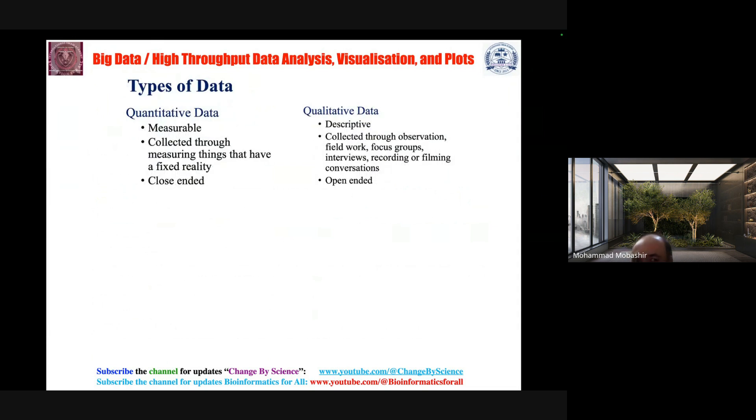There are two different types of data: quantitative and qualitative. Quantitative data is measurable, collected through measuring things that have a fixed reality and is close-ended. Qualitative data is descriptive, collected through observation, field work, focus groups, interviews, recording or filming conversations, and is open-ended.